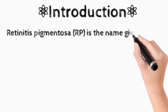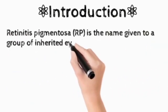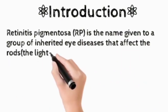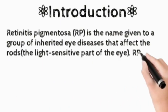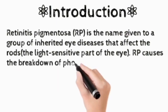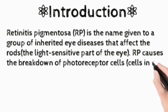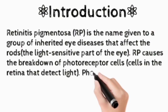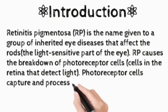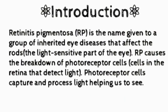RP is a name given to a group of inherited eye diseases that affects the rods in the retina. RP causes the breakdown of photoreceptor cells. Photoreceptor cells are the cells that capture and process light, helping us to see.